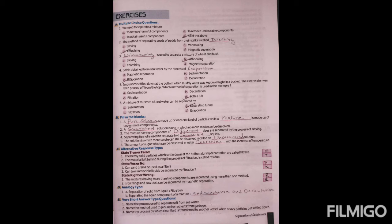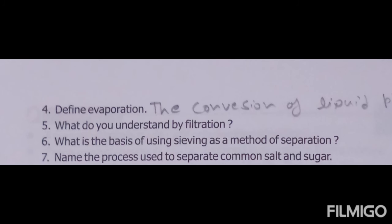More fill in the blanks: A mixture having components of different sizes is separated by the process of sieving. A separating funnel is used to separate two immiscible liquids. A solution in which more solute can still be dissolved is called an unsaturated solution. The amount of sugar that can be dissolved in water increases with an increase in temperature.